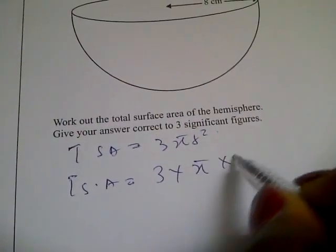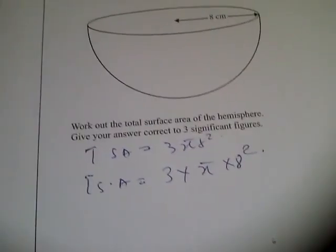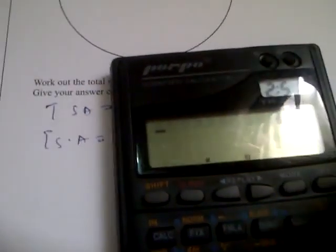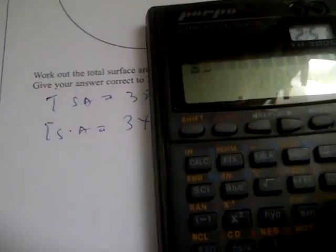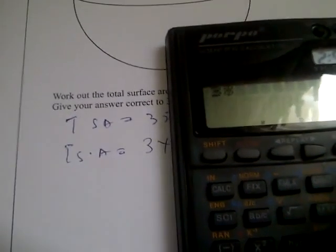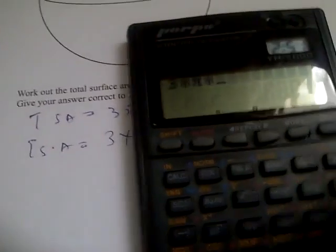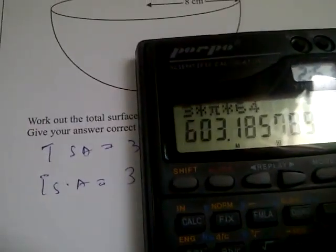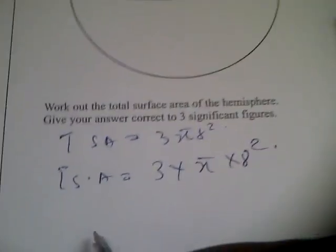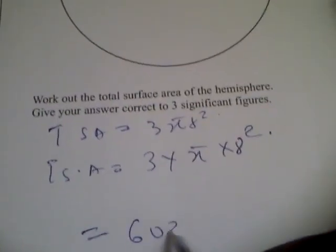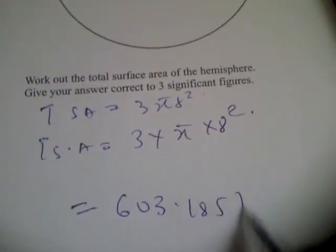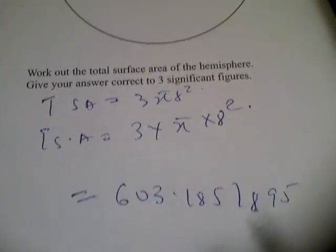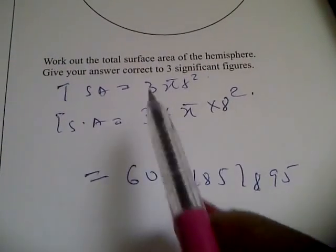times π times 8². Now find the value in your calculator. We have 3 times π times 8 squared. 8² is 64, which equals 603.185789...